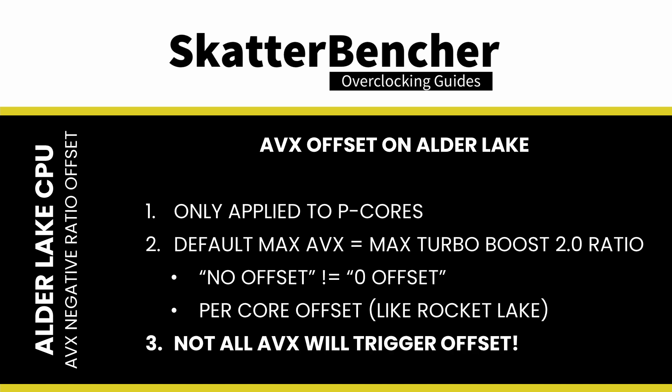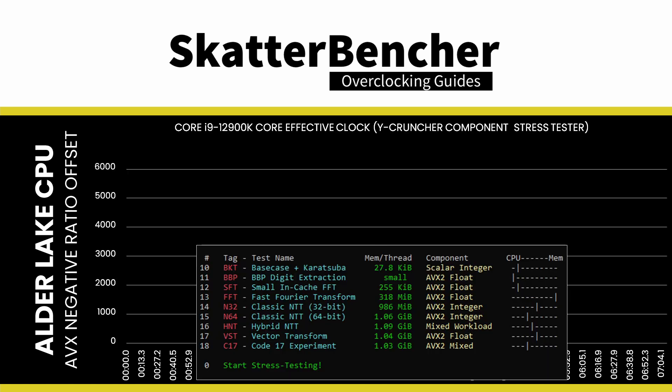Third, Intel has made some changes to how it flags an AVX workload. The effect is that some live AVX workloads will no longer trigger the AVX negative offset. We can demonstrate this new behavior using YCruncher. We ran the YCruncher component stress tester to run a variety of AVX workloads on the 12900K. We configured the 12900K as follows: 5 GHz for the P cores, 3.9 GHz for the E cores, and an AVX offset of 5 ratios.